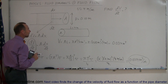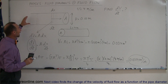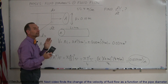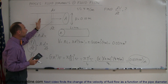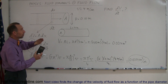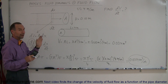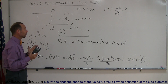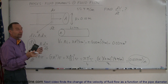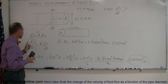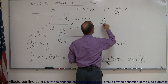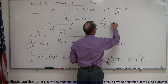Now, regardless of what the pipe does — whether it gets narrower, wider, goes up, or goes down — the volume per unit time flowing through the pipe must stay constant. Otherwise fluid would build up or disappear, which can't happen. So dV/dt must always be constant.